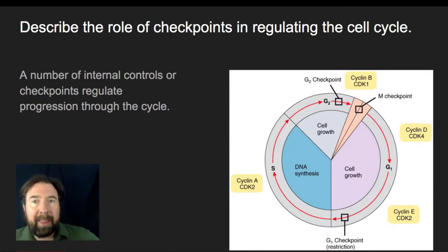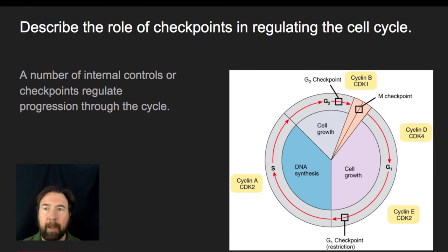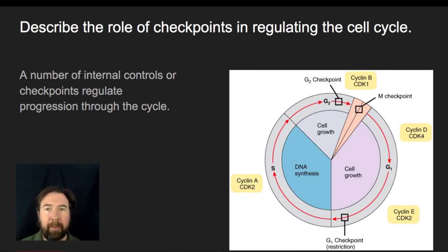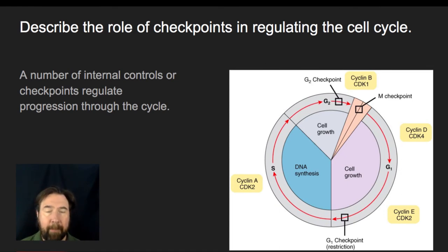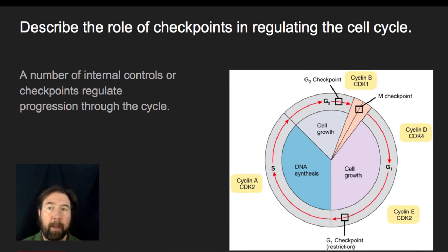Along with the cell cycle being a series of steps, there are also checkpoints found throughout that allow the cell to know whether it should proceed to the next phase, or whether it should pause in the current phase. These are a series of chemical signals. Some are impacted by regulatory signals outside the cell — particularly in multicellular organisms, where cells communicate about whether they're touching another cell or where they are in a layer.